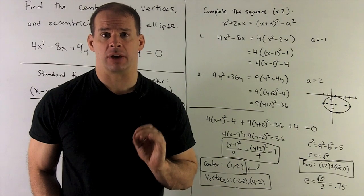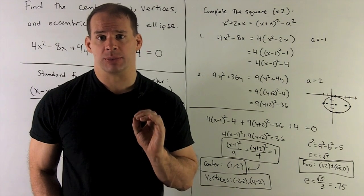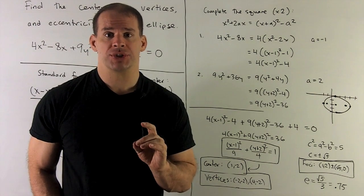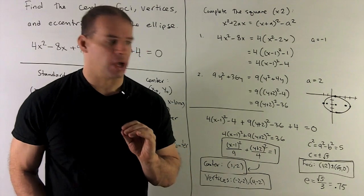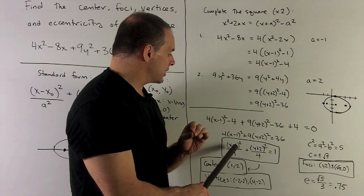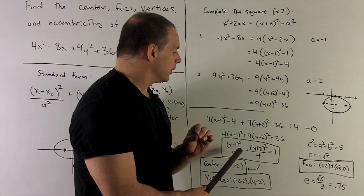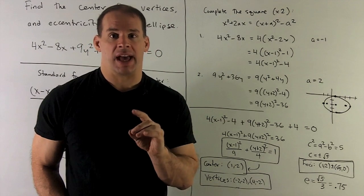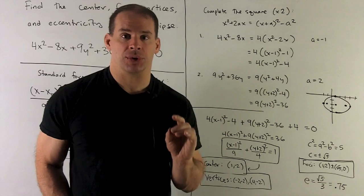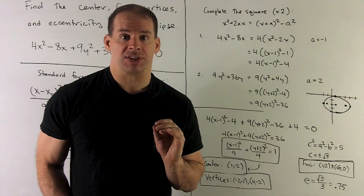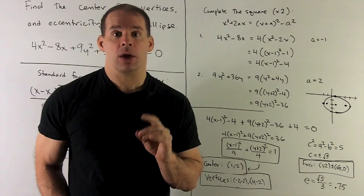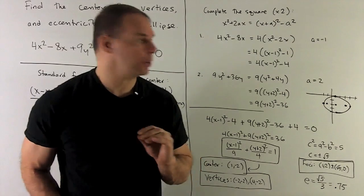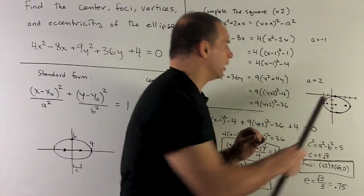Now that we have our equation in standard form, I want to pick off all the items on our list. First, the center. I have x - 1, so our x₀ is going to be equal to 1. Here, I have y + 2. If I think of this as y - (-2), we have y₀ = -2. So, that gives us our center at (1, -2).